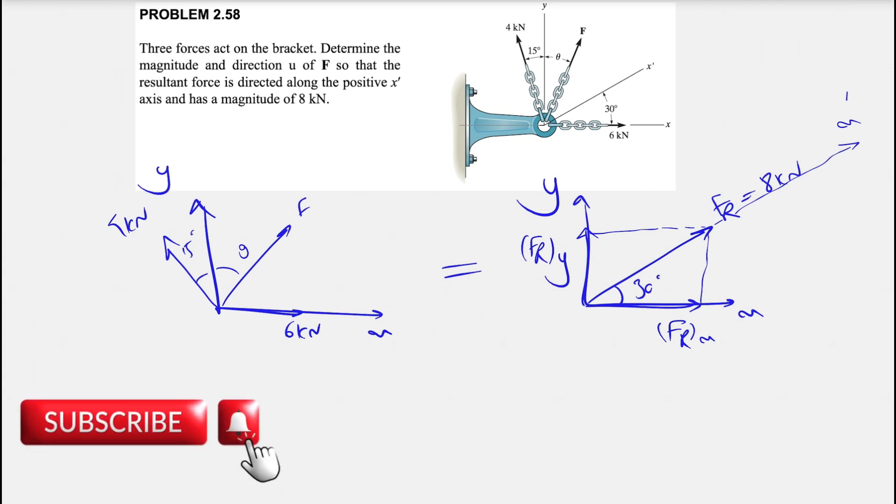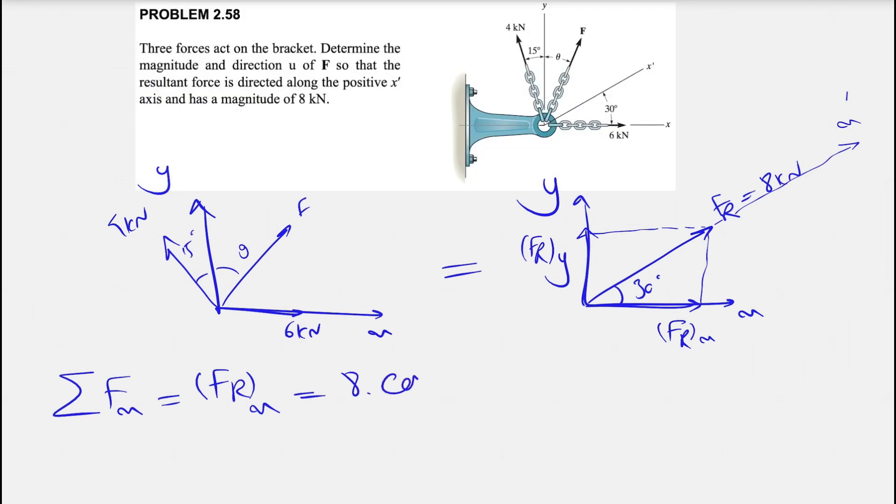So all we need to do is to find the sum of all forces in x and y direction. And what we have for x has to be equal to FR x, which we know will be 8 times cosine of 30. And we have to find the sum of all forces in x direction.